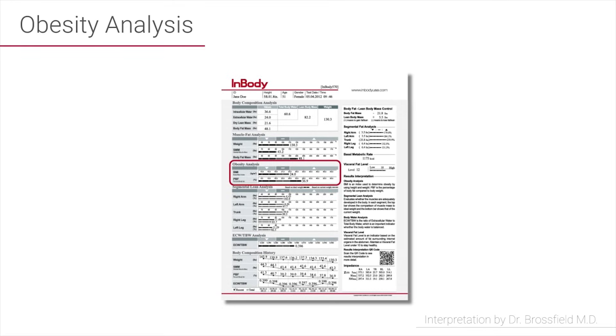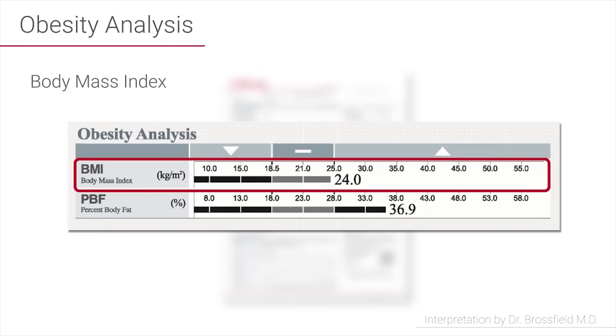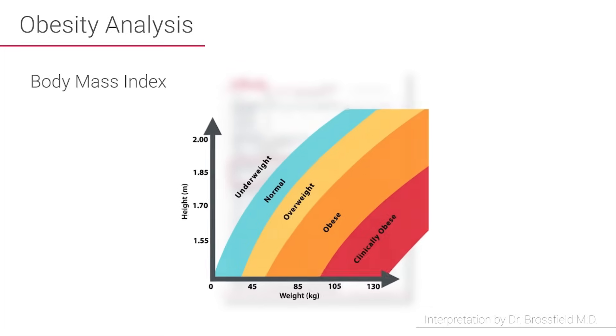The next section of the results sheet is the obesity analysis section. This section includes your BMI, which is your body mass index, and your percent body fat (PBF). Body mass index is used by a lot of government agencies to assess risk. We know of this as a calculation of normal weight, overweight, or obesity. The problem with the BMI is that it's limited to just looking at your weight and your height and doesn't take into account what you're made of.